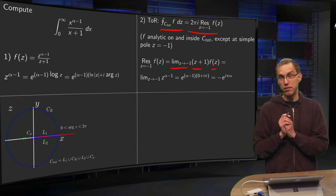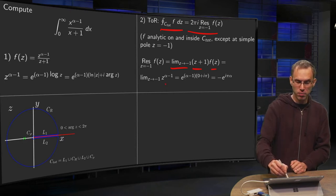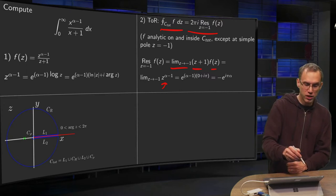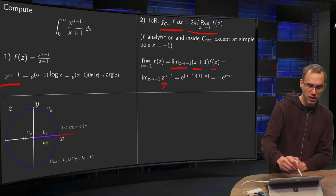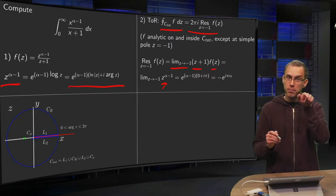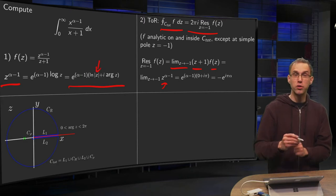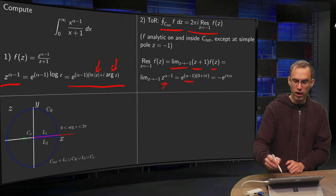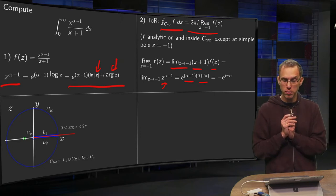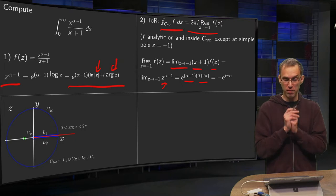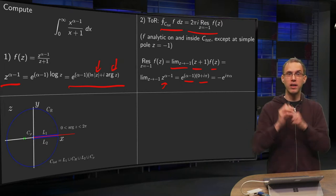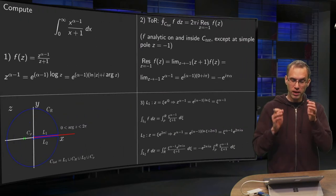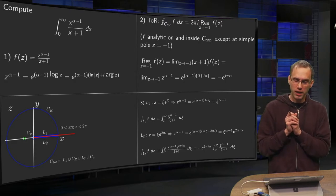If we multiply f of z by z plus 1, we're just left with z to the power alpha minus 1. And at minus 1, we can use the definition: z to the power alpha minus 1, we get this expression. And at minus 1, the norm is just 1, so the ln of norm equals 0, argument equals pi, so we get e to the power alpha minus 1 times i pi, or e to the power i pi alpha. So that's the residue.